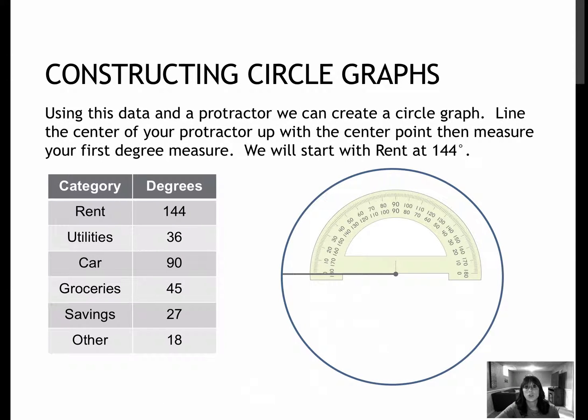Now to construct our circle graph, we're going to take our degree measures for each of those. And I'm going to start by placing my protractor, the center of my protractor, on the center of a circle. So you're going to want to go ahead and draw a circle. You can use a compass to do that. And then just draw any line.